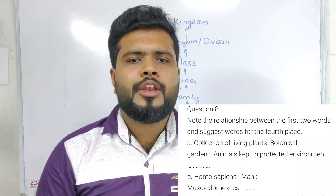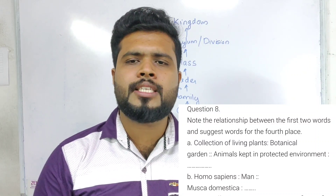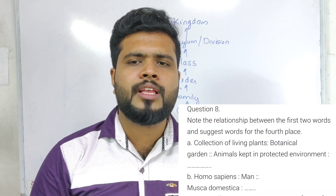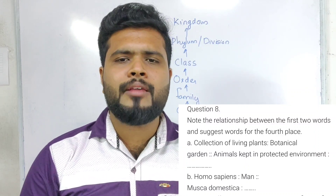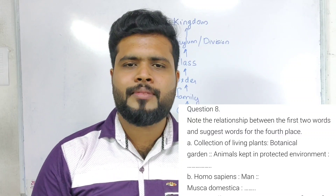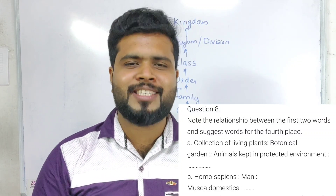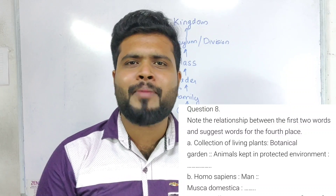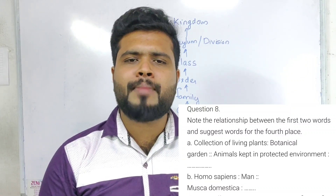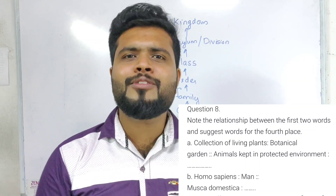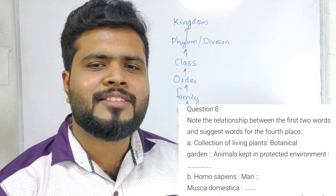Note the relationship between the first two words and suggest a word for the fourth place. Collection of living plants is botanical garden; animals kept in a protected environment is zoological park. Homo sapiens relates to Musca domestica as housefly — a very easy question.